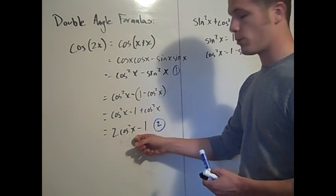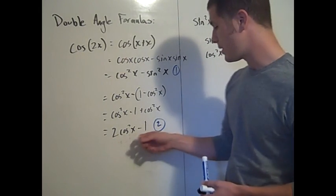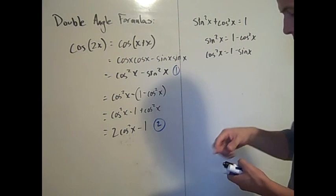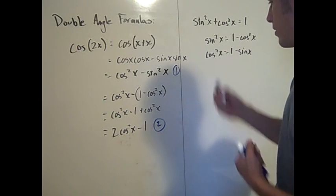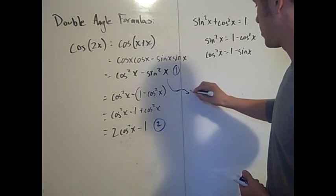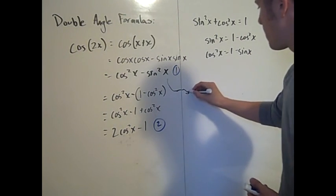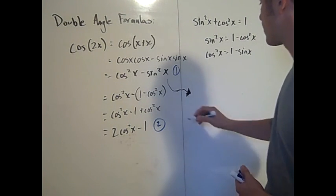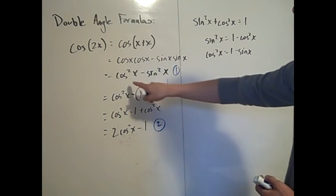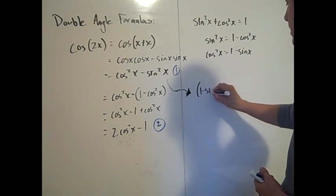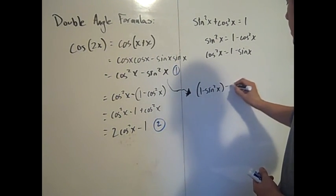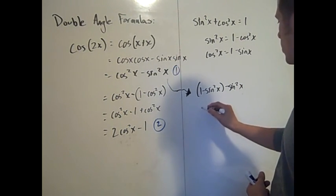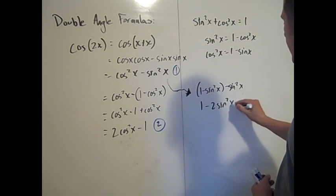We'll actually use that second form in a moment to prove a half angle identity. For the third form, we go back to the first form, cosine squared x minus sine squared x, and this time plug in cosine squared x equals 1 minus sine squared x.